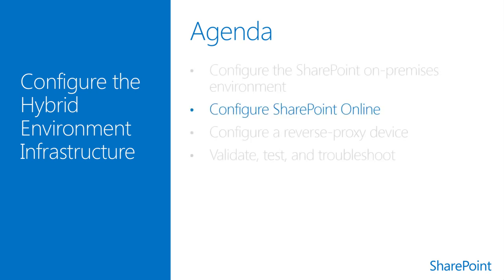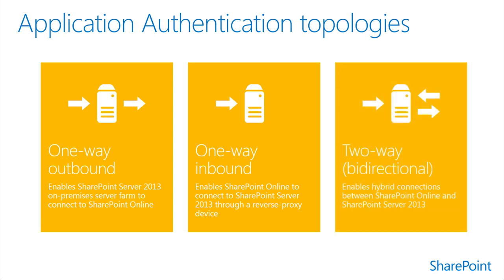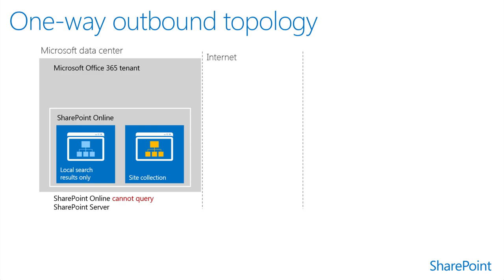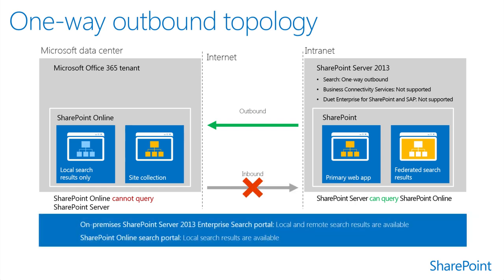This section provides an overview of configuring the SharePoint Online environment. Your choice of an authentication topology determines how you'll configure certificates and the capabilities of your hybrid solution. A one-way outbound hybrid authentication topology enables hybrid service integration in one direction only. In this topology, your on-premises SharePoint 2013 farm can consume content and resources from your Office 365 tenant. For example, search can be configured to allow federated users to see both local and remote search results in a SharePoint 2013 search portal, but only local results are available in the SharePoint Online search portal.